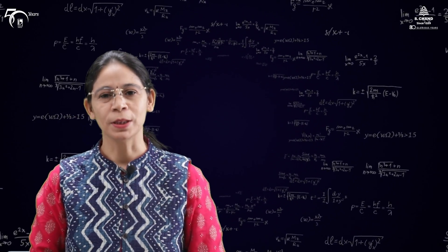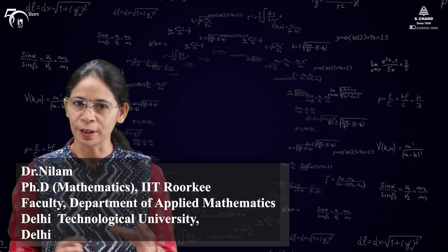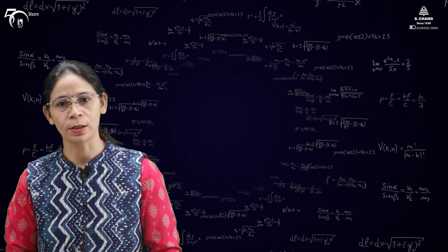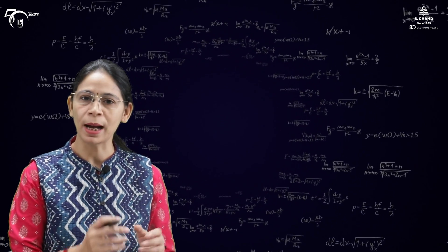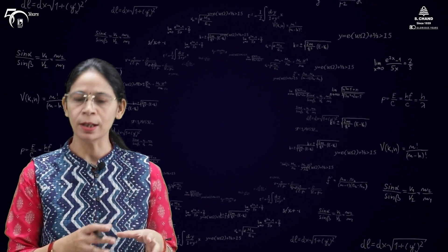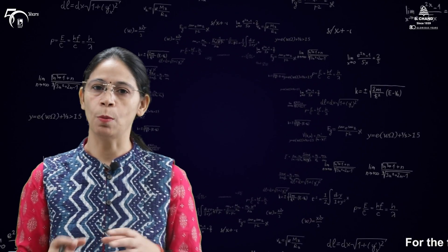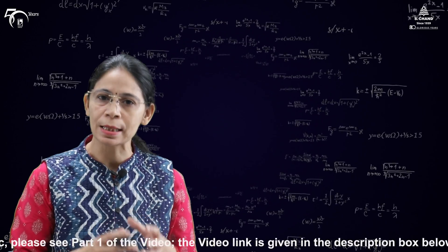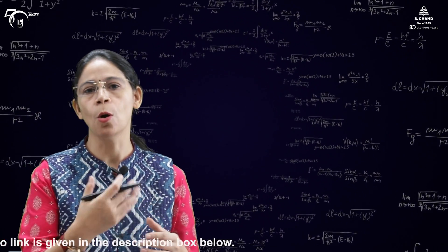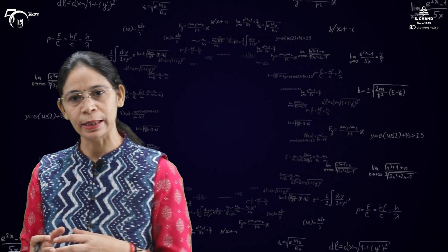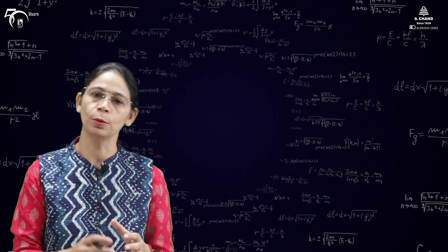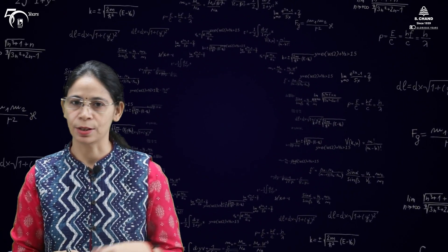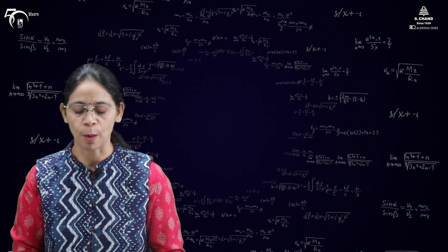Welcome back to the second part of today's video. In the first part we understood how to write a linear differential equation of second order with constant coefficients. The general solution consists of two parts: one is the complementary function and another is the particular integral. The complementary function is the solution corresponding to the homogeneous part, and the particular integral is the solution corresponding to the non-homogeneous part — that is, the right-hand side R(x).